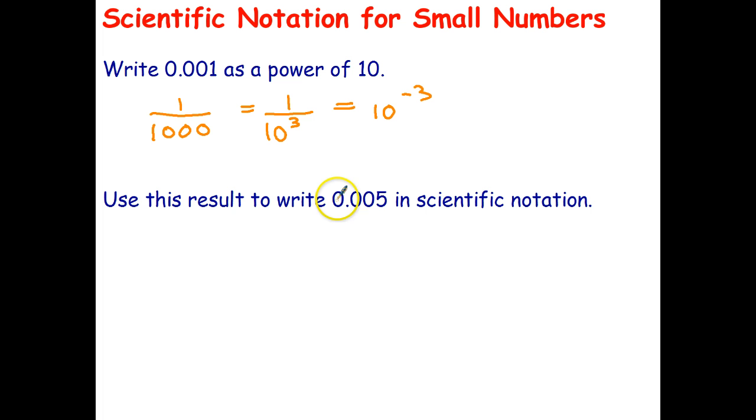Well, how would you write 0.005 in scientific notation? Well, that number is just five times that number, so it's going to be 5 times 10 to the power of negative 3.